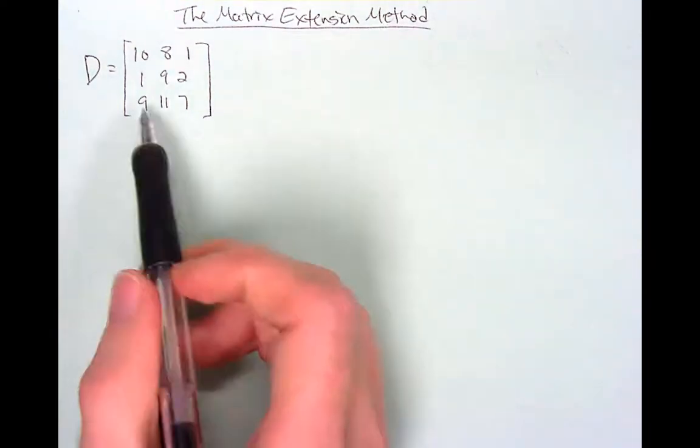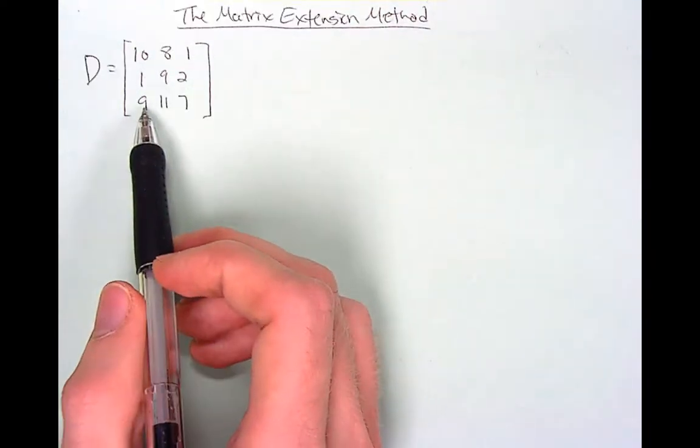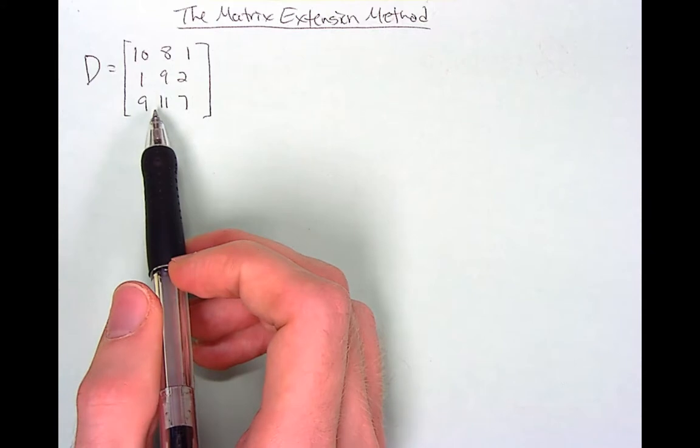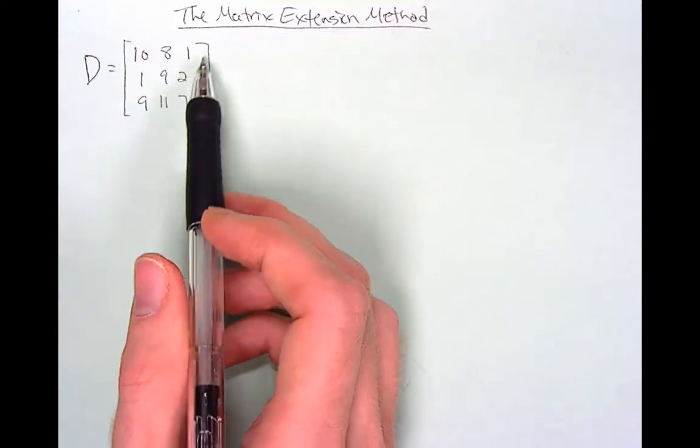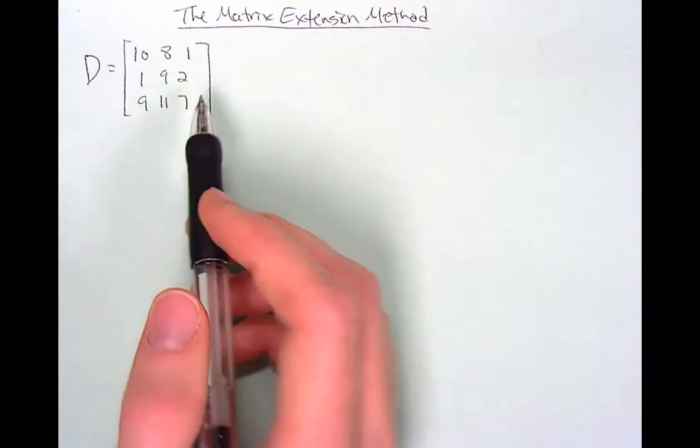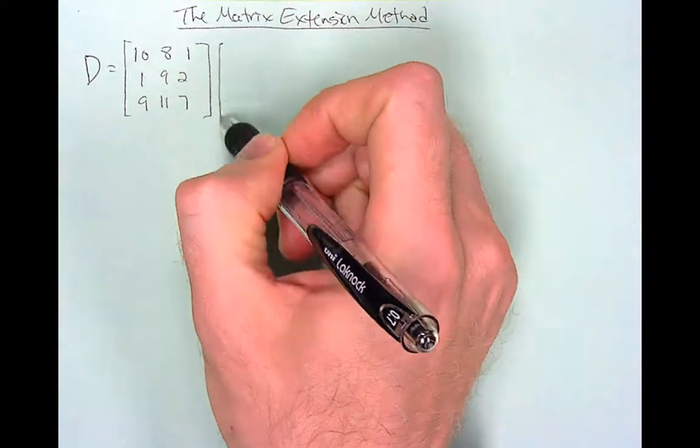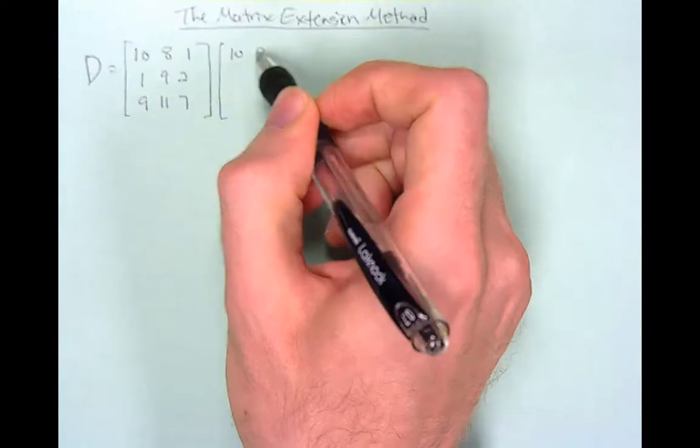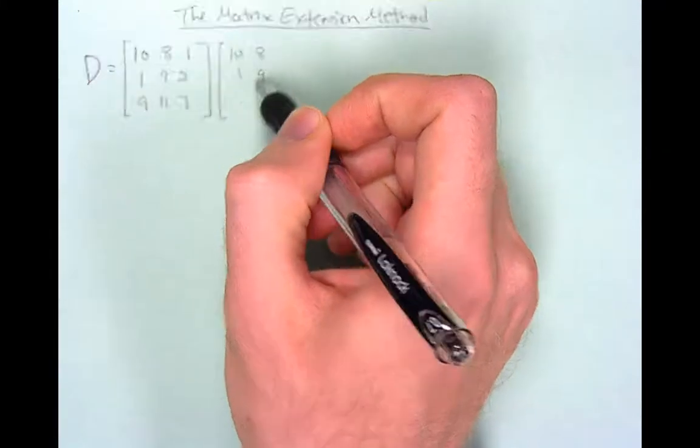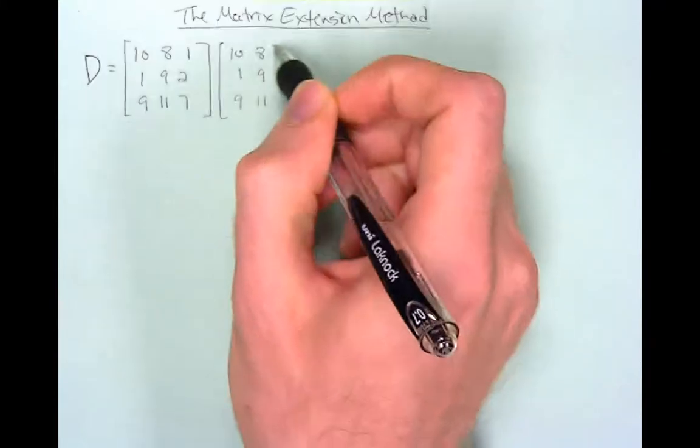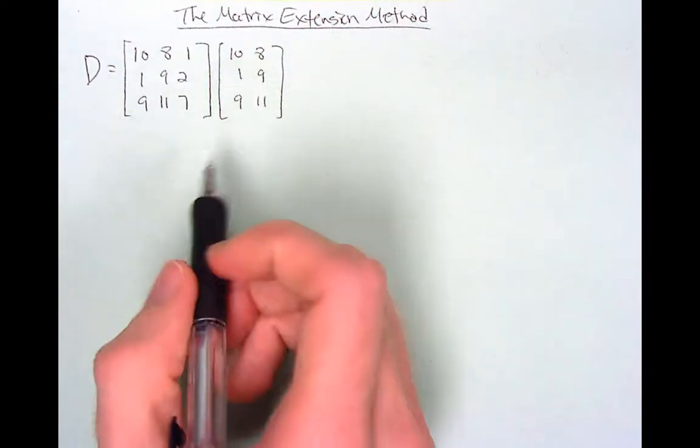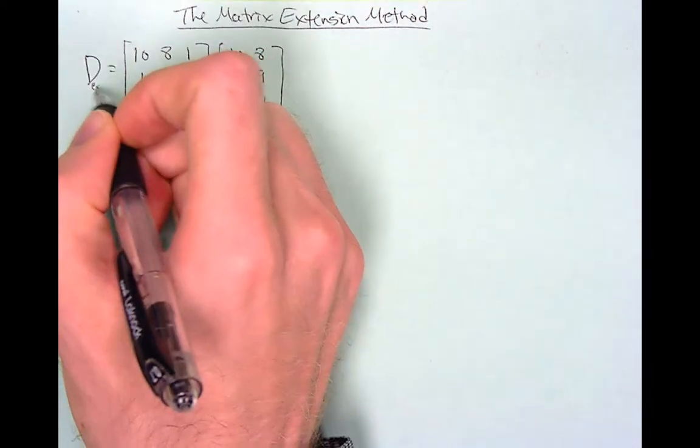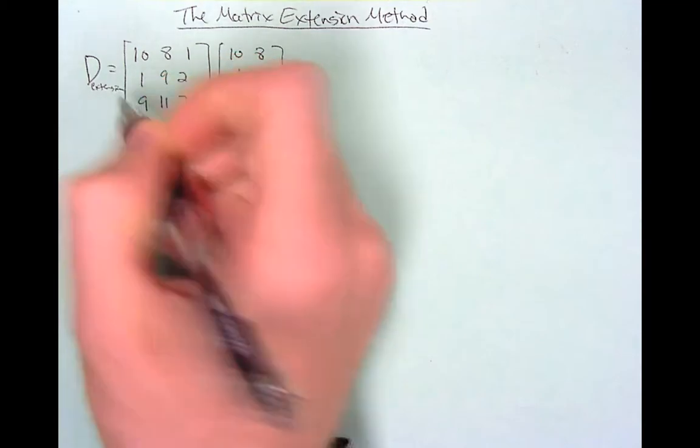Since it's a 3 by 3 matrix you're going to take the first and second columns and write those again to the right of the third column like this: 10 8, 1 9, 9 11, essentially creating a 3 by 5 matrix and you call this the D extension matrix.